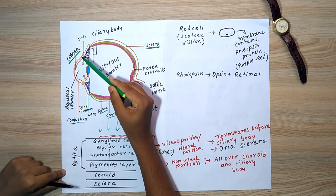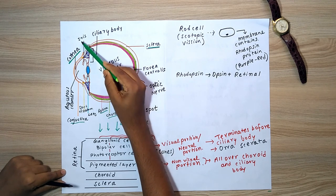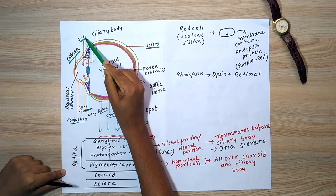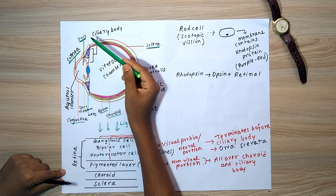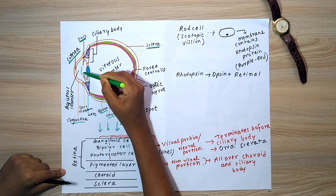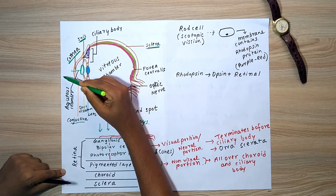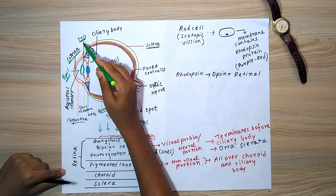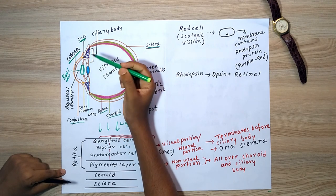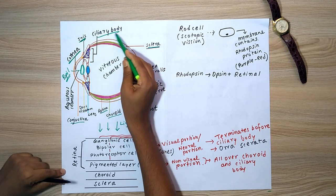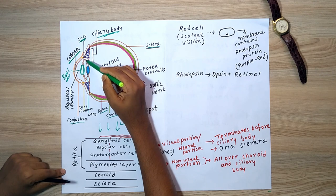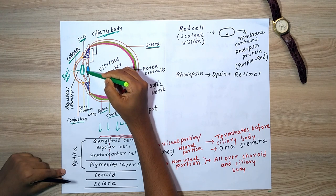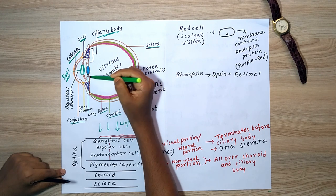The ciliary body consists of a bulging part known as the iris. The iris determines the color of the eye. The pupil is the curvature surrounding the iris, and its color depends upon the iris. The ciliary body also projects ligament fibers which hold the lens and help in its contraction and relaxation to focus light on the retina.